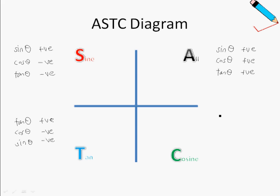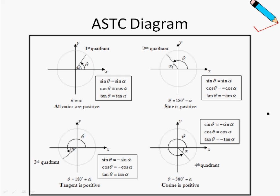In the last quadrant, the cosine quadrant, only cosine of theta is positive, whereas sine and tangent of theta are negative. To summarize: in the first quadrant all ratios are positive, in the second quadrant only sine is positive, in the third quadrant only tangent is positive, and in the fourth quadrant only cosine is positive.